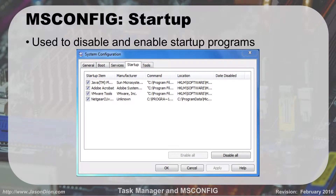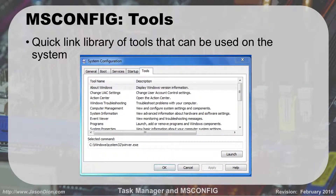The last tab is Tools, which is really just a list of shortcuts. Here you have links to displaying the Windows version, changing UAC settings, the Action Center, Windows troubleshooting, Computer Management, System Information, Event Viewer, Programs, and System Properties. It's a long list of things you may need access to when doing repairs on someone's computer. So if you can't remember how to get to Computer Management, you can go into MS Config, click on Tools, and there's a link right there.